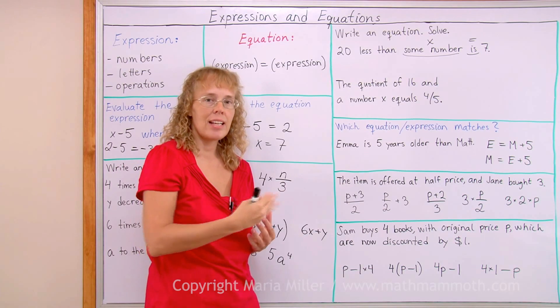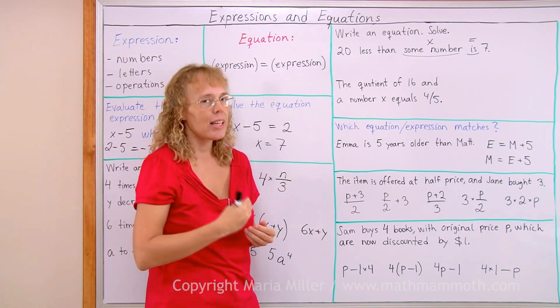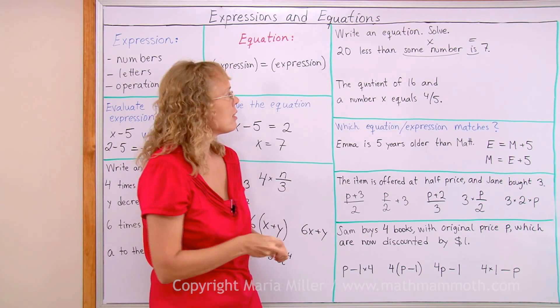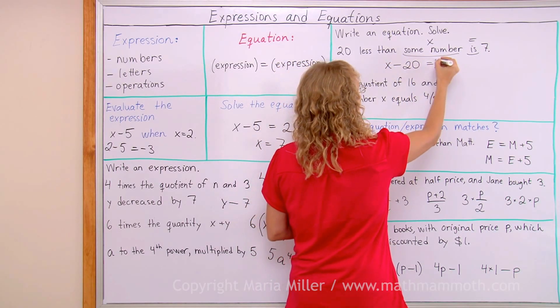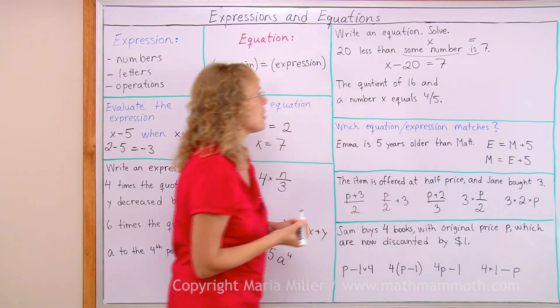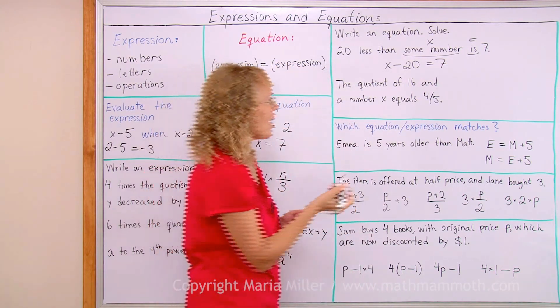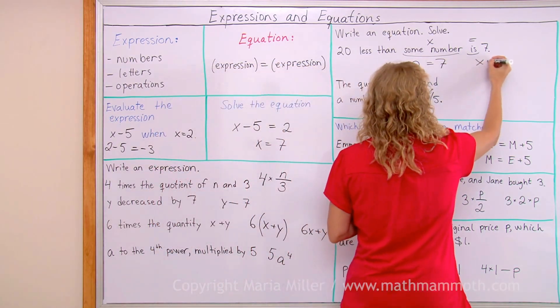Okay, 20 less than x means that from x we take away 20, right? So this is actually x minus 20 equals 7. To solve it you can maybe see the solution, but I add 7 and 20 so x is 27.